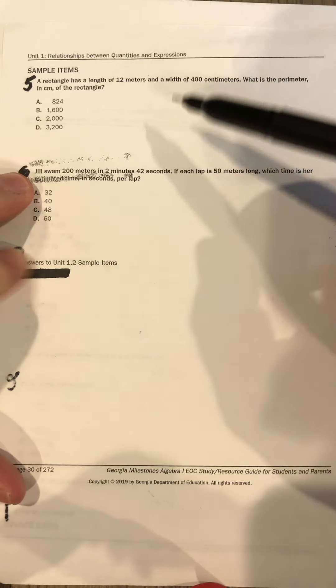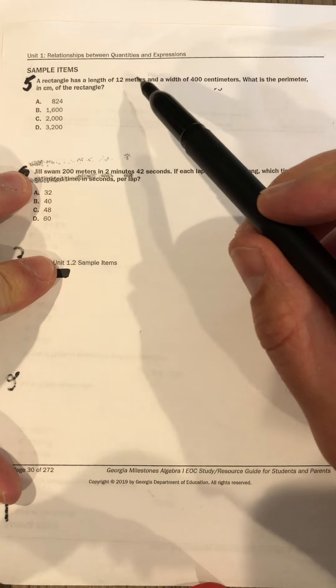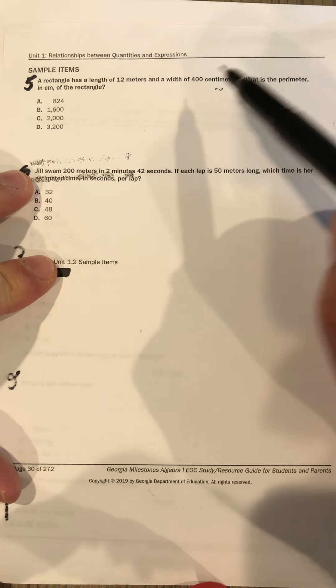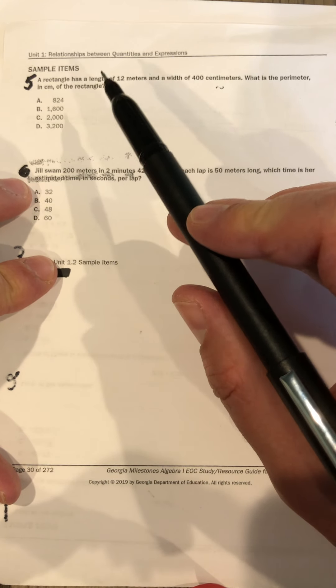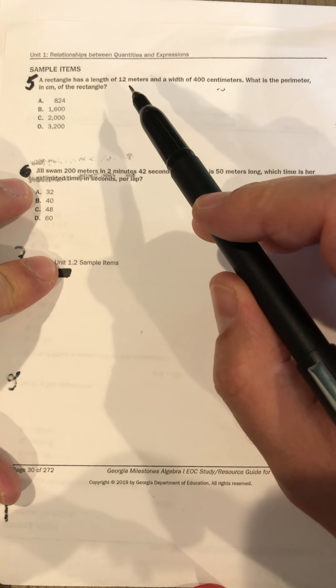Ooh, okay, number five. A rectangle has a length of 12 meters and a width of 400 centimeters. Whoa, okay—meters and centimeters problem, right? We need to have the same thing. What is the perimeter in centimeters of the rectangle? Okay, two things you need to know: first, that centimeters is good to go. I need to convert 12 meters to centimeters, so a quick Google calculation will do that for you.